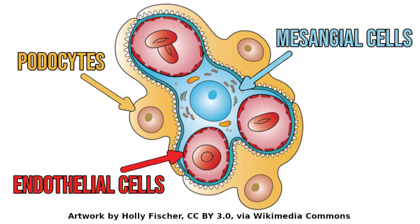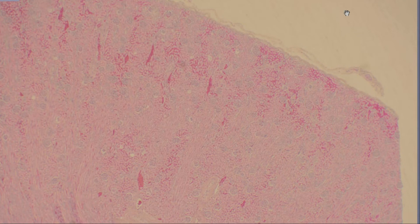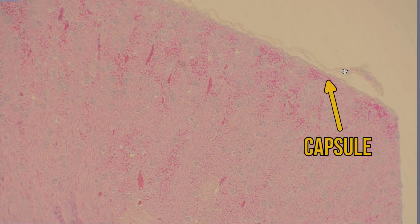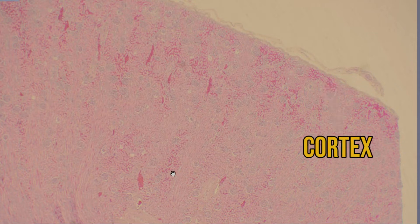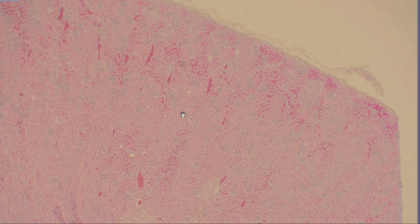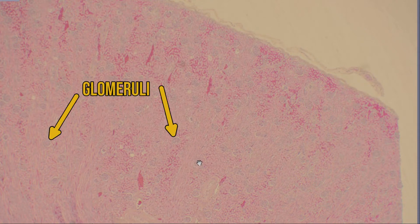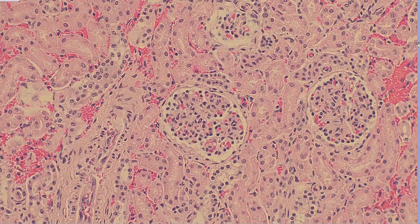And now on to the histology. This is the kidney at low power. We have a thin fibrous capsule along the outside, and then the cortex beneath that. The cortex is formed of the tubules, both proximal and distal, and the glomeruli, which you can see as each of these round structures surrounded by a thin white halo. So let's focus in on a glomerulus and see if we can find some of the structures that we were talking about.